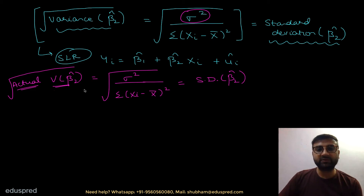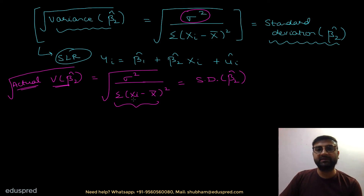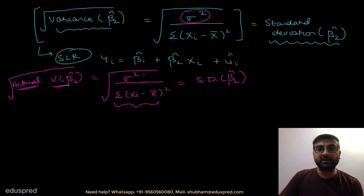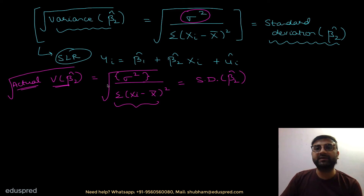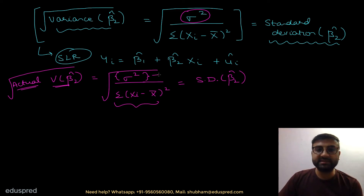The problem is that in real life, you will never be able to find the actual variance of beta 2 hat. Finding the denominator is never an issue because you already have data on your independent variable x. The issue is the numerator — you will never know the value of sigma square, because you do not have any data on the population error, which means you cannot find the variance of the population error. So this sigma square is unknown.